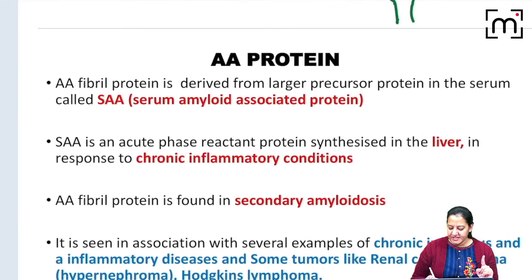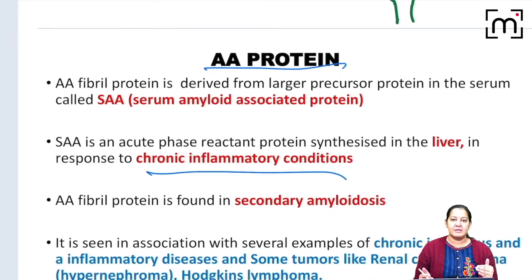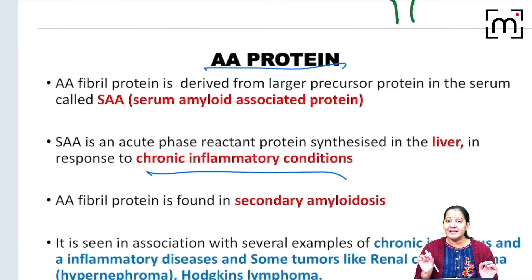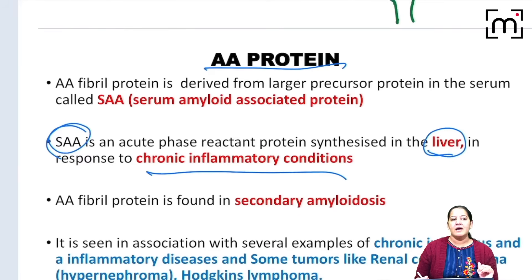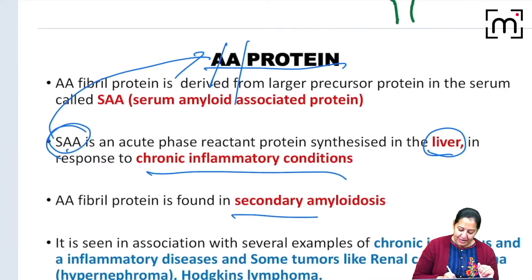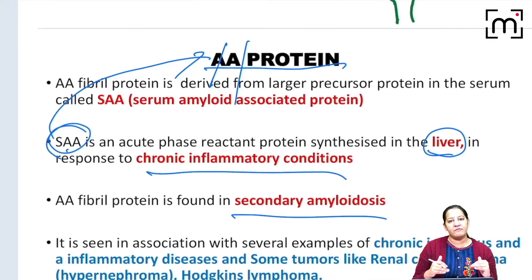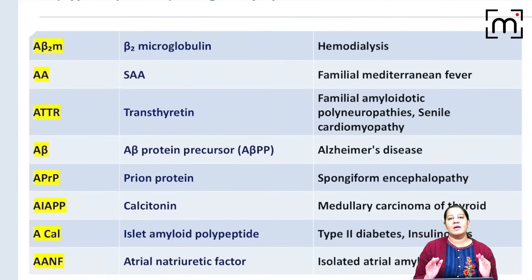The second type is AA amyloid. In AA, the person has a chronic inflammatory disorder like tuberculosis or rheumatoid arthritis. In chronic disorders, the macrophage gets activated and secretes cytokines that stimulate the liver. The liver produces a protein called serum amyloid associated protein (SAA). This SAA is then partially degraded by macrophages, and the partially degraded SAA forms AA amyloid. That is why it is called amyloid associated protein. This is secondary amyloidosis — the primary disease is the chronic inflammatory condition.